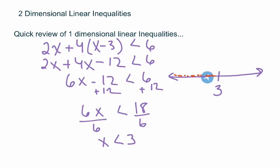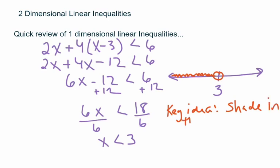It's all of these numbers up to the 3, but not including the 3 — so like 2, 2.5, 2.9, 2.99, but not the 3. The way we indicate the 3 not being included is we use an open circle, and then we color in everything less. The key idea is that we shade in or color the solutions. We put a dot everywhere there's a solution, but not at the 3 because the 3 was not included.